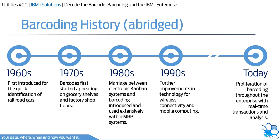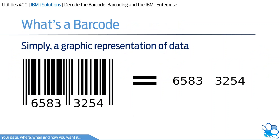Barcoding has become the mainstay of business today. But what is a barcode? What are its benefits for my enterprise? How do we make it work for us? In very simple terms, a barcode is a graphical representation of data. Every barcode is encoded with a special start and stop character. These codes help the reader detect the barcode and figure out whether it's being scanned forward or backwards. The barcode you require depends upon the data you need to store within it and its application.